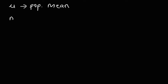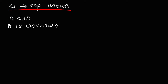Let's say the sample size is less than 30 and the population standard deviation is unknown. If these two conditions are met, we need to use the T distribution. Our T value is going to be the sample mean minus the population mean, divided by the sample standard deviation over the square root of N, where N is the sample size.